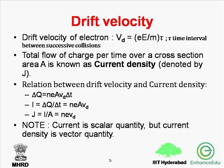The relation between drift velocity and current density: current density J is the total flow of charge per time over a cross-sectional area A. Delta Q can be given by n·e·A·v_d·Δt, where n is the free electrons per unit volume, v_d is the drift velocity, and Δt is the time interval. Here, A·v_d·Δt represents a volume, so the number of free electrons in that portion is n·A·v_d·Δt. Therefore, current density J = i/A = n·e·v_d.